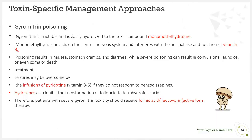For gyromitrin poisoning: gyromitrin is unstable and is easily hydrolyzed to the toxic compound monomethyl hydrazine, which acts on the central nervous system and interferes with the normal use and functioning of vitamin B6. Poisoning results in nausea, stomach cramps, and diarrhea; severe poisoning can result in convulsions, jaundice, coma, or death. Treatment: seizures may be overcome by infusion of pyridoxine (vitamin B6); if unresponsive, benzodiazepines can be given. Since hydrazines also inhibit the transformation of folic acid to tetrahydrofolic acid, patients with severe gyromitrin toxicity should receive folic acid in its active form.